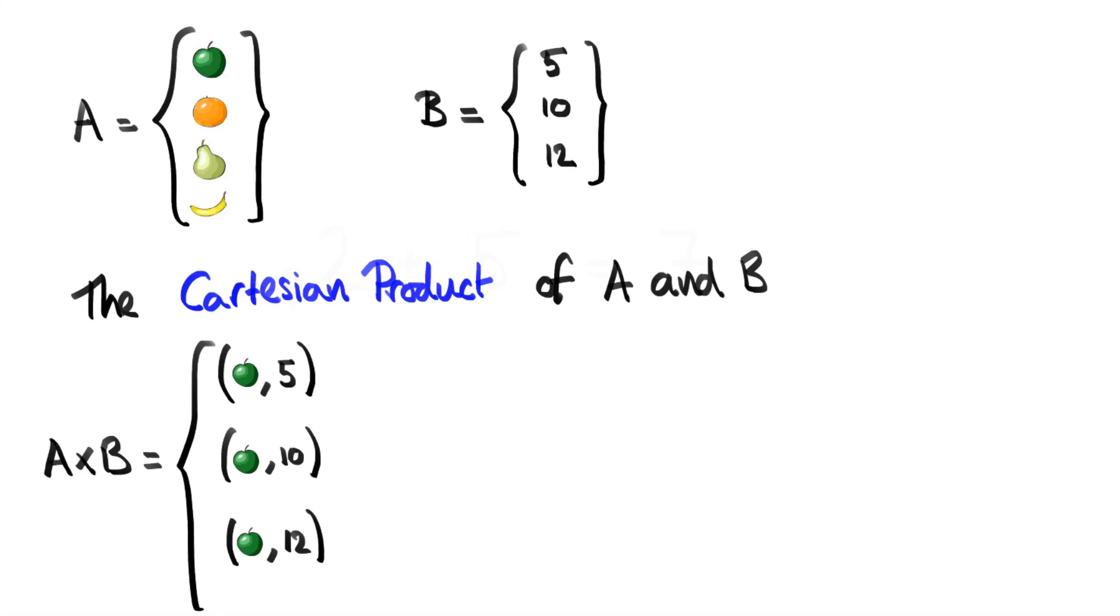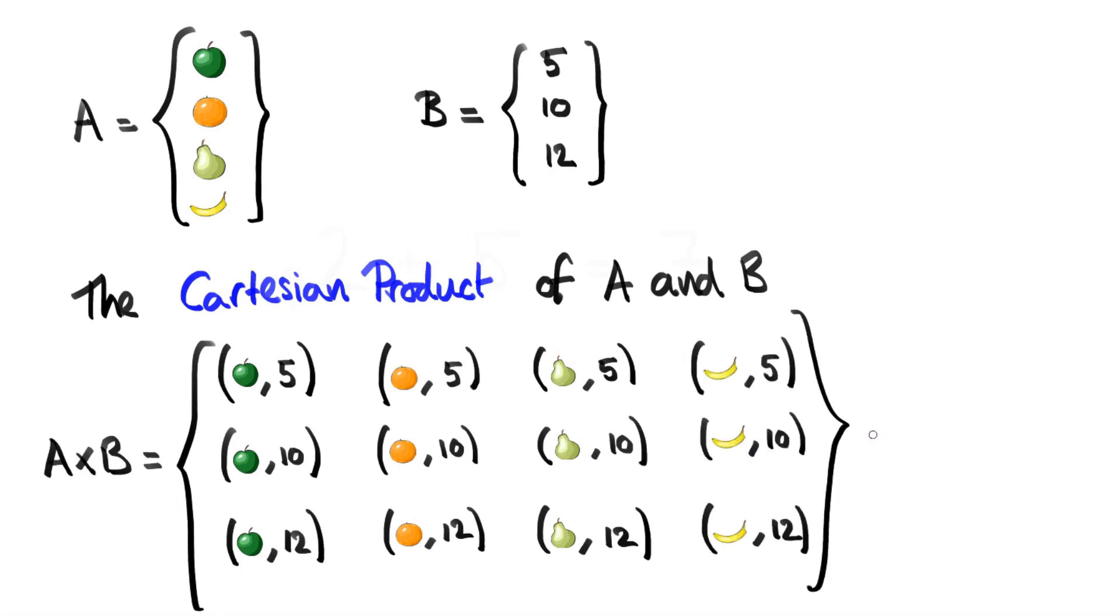But there's no more different elements from B we can use, so we're going to have to change the element that we're using from A. So now for our fourth element, we're going to have orange and 5, and then orange and 10, orange and 12, and so on. The next three are going to use the pear element from A, and then the final three are going to use the banana element from A. And that's it, we're done.